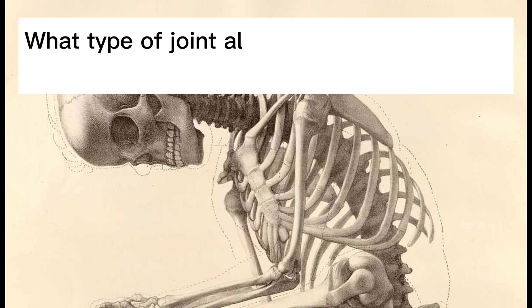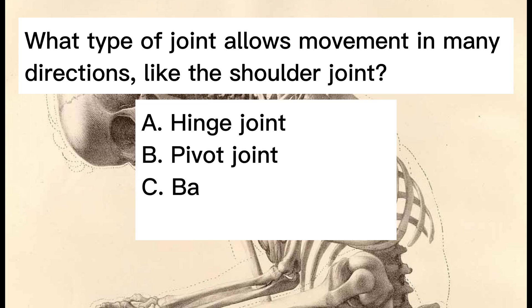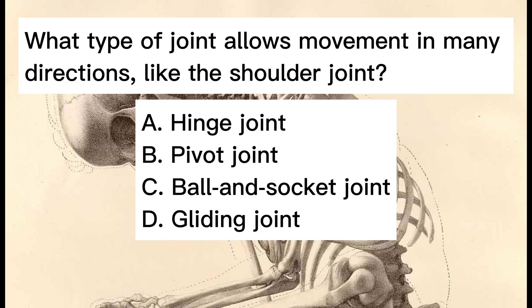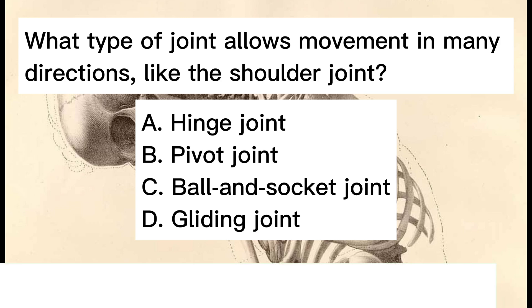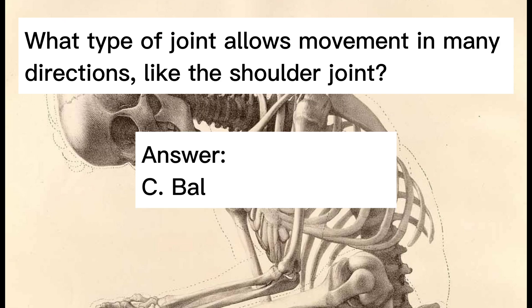What type of joint allows movement in many directions, like the shoulder joint? A. Hinge joint. B. Pivot joint. C. Ball and socket joint. D. Gliding joint. Answer: C. Ball and socket joint.